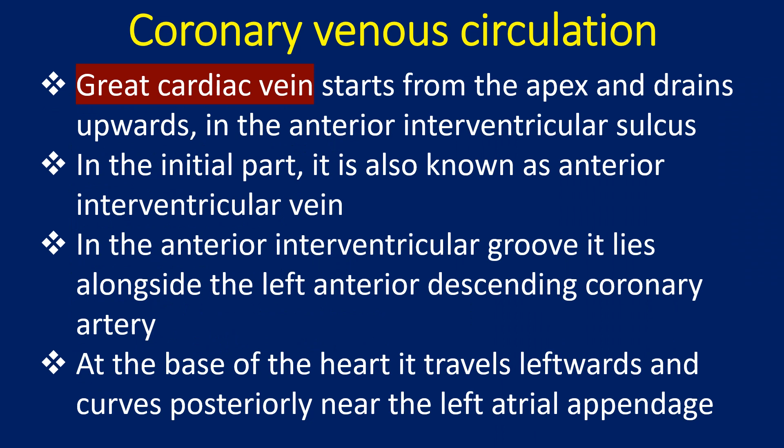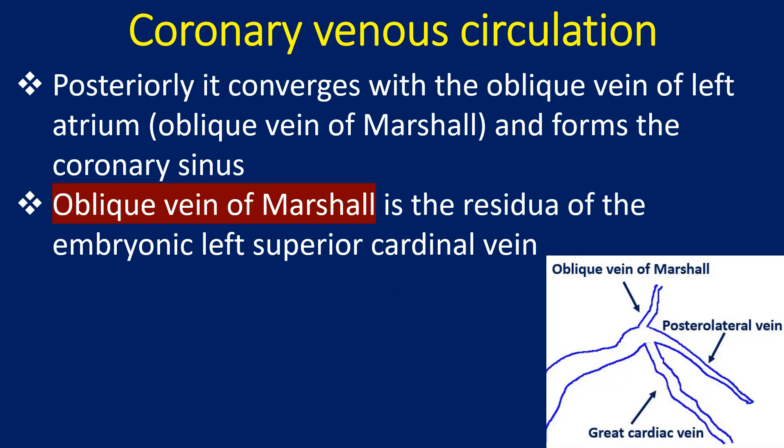The great cardiac vein starts from the apex and drains upwards in the anterior interventricular groove — in its initial part it is also known as the anterior interventricular vein. It lies alongside the left anterior descending coronary artery. At the base of the heart, it travels leftwards and curves posteriorly near the left atrial appendage. Posteriorly, it converges with the oblique vein of the left atrium, or oblique vein of Marshall, and forms the coronary sinus.